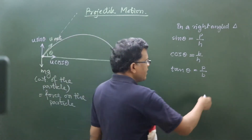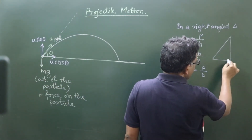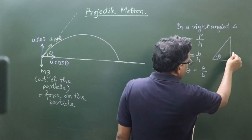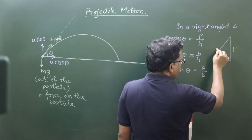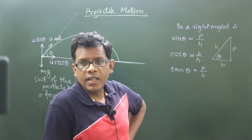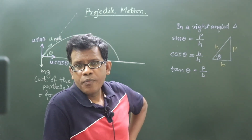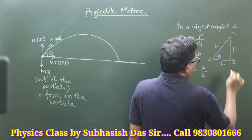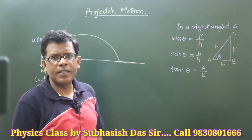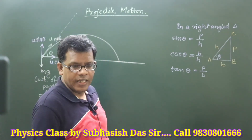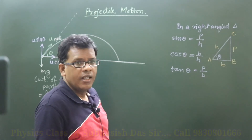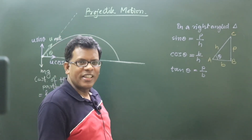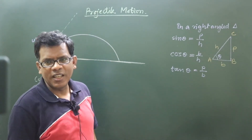From a right-angled triangle — if we take a triangle where theta is this angle — as per the geometry, the side opposite to theta will be the perpendicular, this side will be the base, and this side will be the hypotenuse. If I mark the vertices of the triangle as A, B, C, in this right-angled triangle you must be getting an idea of which side should be identified as perpendicular, which as base, and which as hypotenuse.